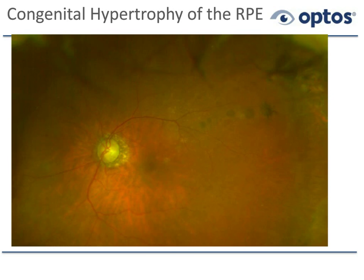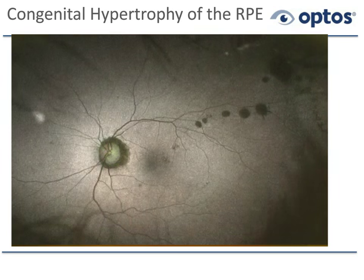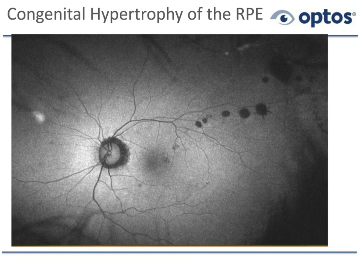Congenital hypertrophy of the RPE — CHRPE, known as CHRPE lesions. In color, and now on autofluorescence, these lesions appear dark. According to Carol Shields, who has seen about 250 of these, in every single case CHRPE lesions are hypoautofluorescent. This is an exception: it doesn't mean we have dead RPE. OCTs through these lesions show the RPE is still present, but the photoreceptors above it are absent, so lipofuscin is not being produced. About 10% of eyes have CHRPE lesions, and the same number have nevi — they look very different on autofluorescence.